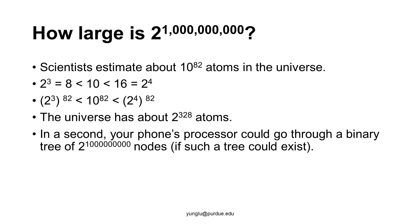Within one second, the processor in a phone could go from the top to the bottom of a binary tree that has 2^(1 billion) nodes. This is an extremely large number, much larger than the number of atoms in this universe. Of course, it is not possible to build such a large tree since we need atoms to store data. The purpose of this discussion is to explain the performance of binary trees. If data can be organized so that half of the data can be discarded in a single step, the data structure is very efficient.